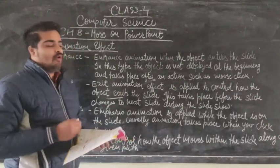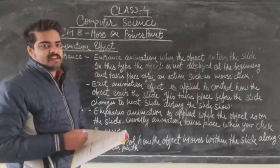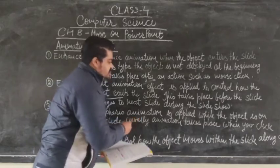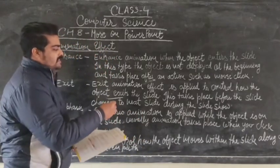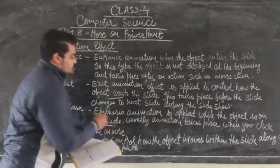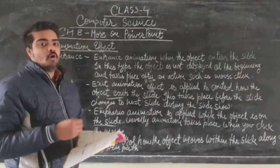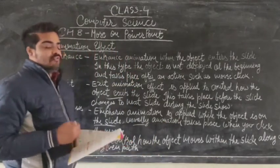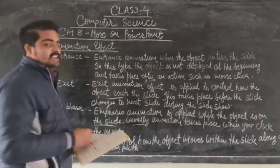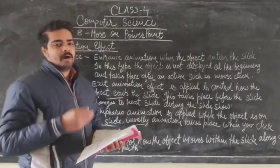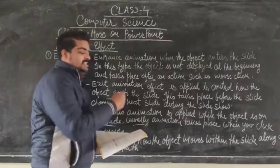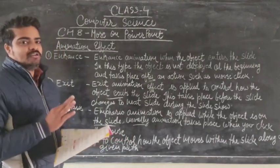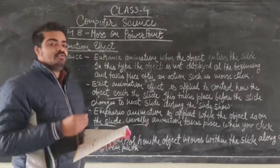The third type is emphasis animation. The emphasis animation is applied when the object is already on the slide. This animation effect is applied to the object on a slide only, and it takes place when you click the mouse.